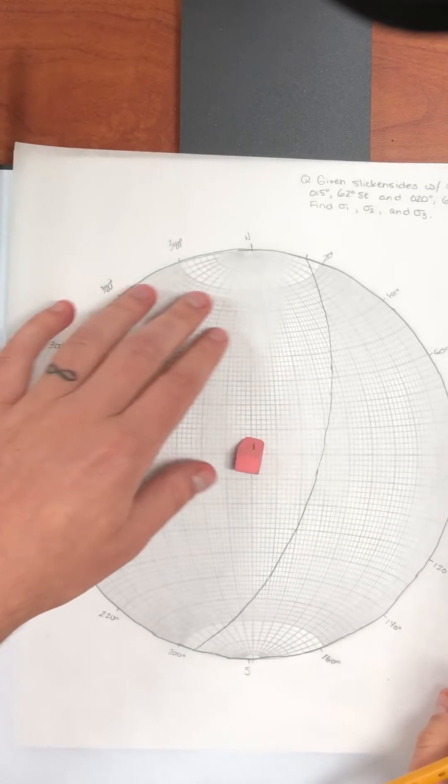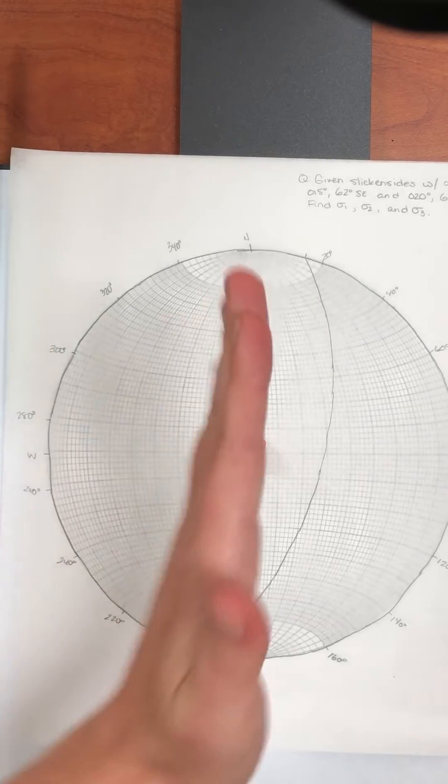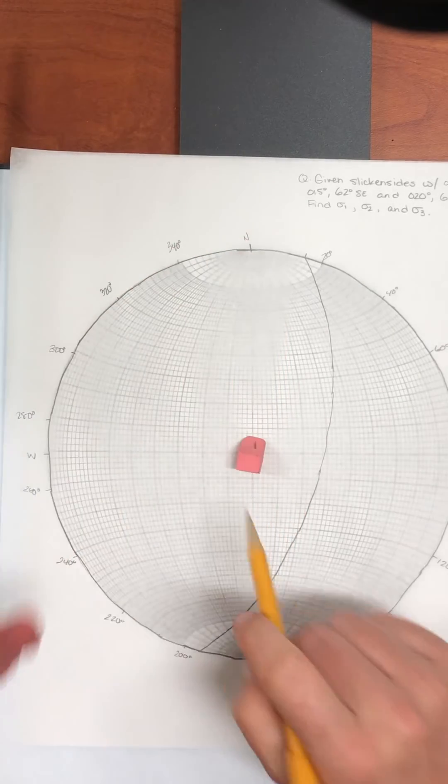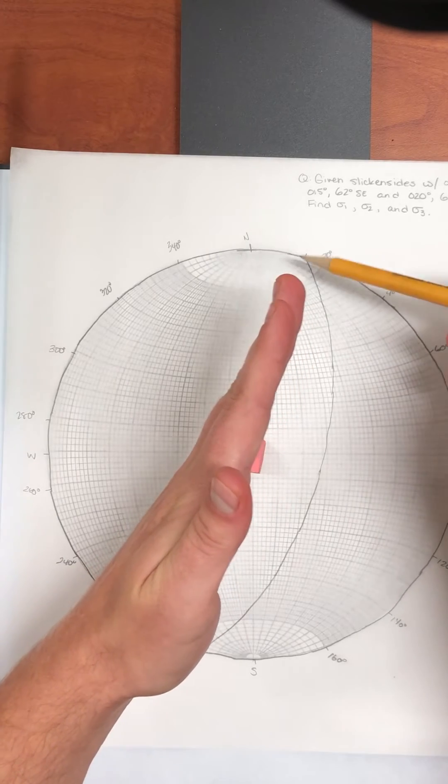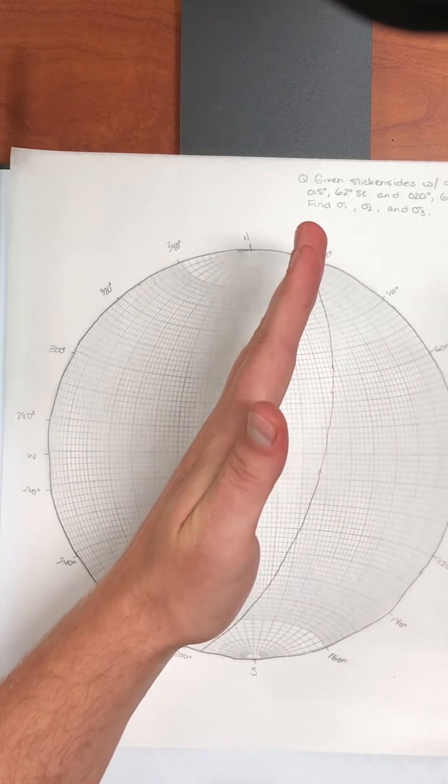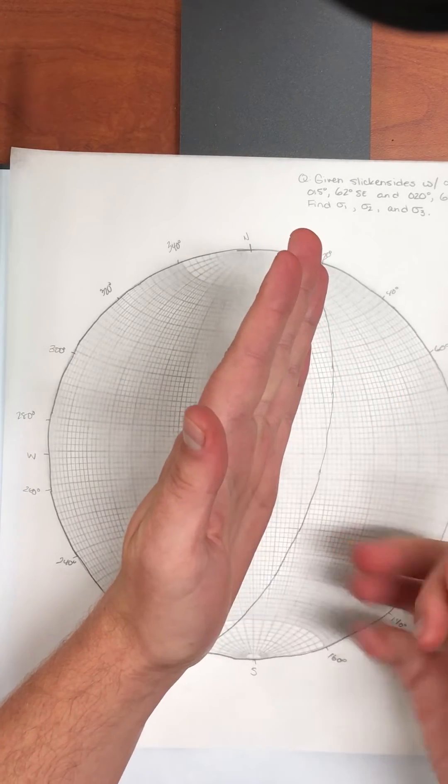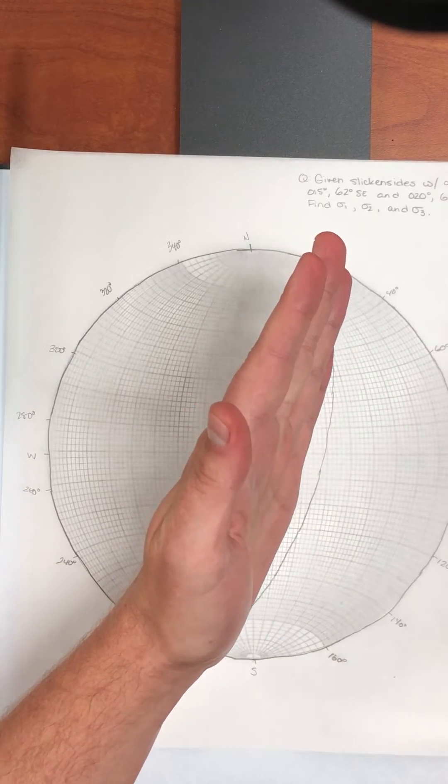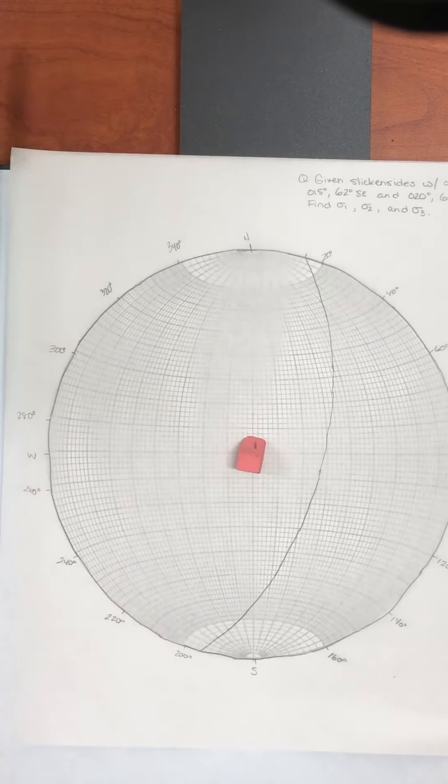Now I'm going to rotate this back to north. So if I want to imagine this plane in space, I can put my hand vertical over the eraser and I can rotate my hand to my fingertips to match this strike point. And then I dip my hand until it represents where my hand would start to slice the stereo net. So that's about what that plane looks like. Let's plot our next plane.